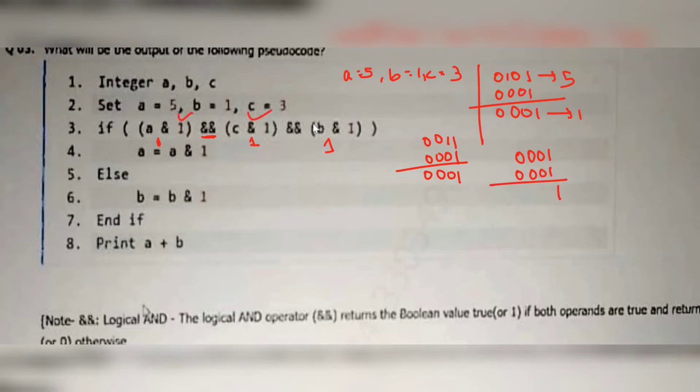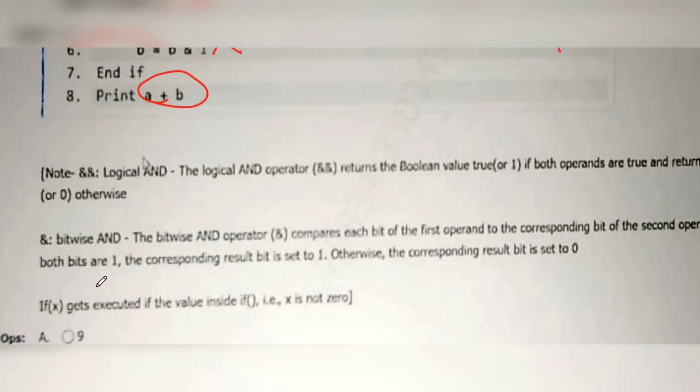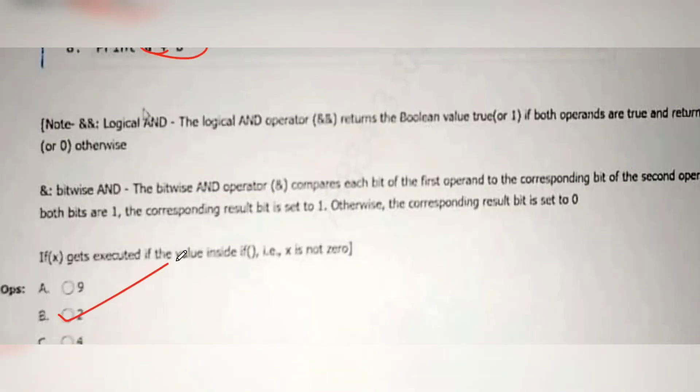So here all the three conditions are true. Here logical and is used. If all the three are true then the output is true. So it will come here and this statement will get executed. So A equal to A and 1 means A value will be updated to A and 1. We have already calculated A and 1 is 1. So A value becomes 1. This else won't get executed. Now print A plus B. A is 1 and B is 1 that is output is 2. Option B is correct.